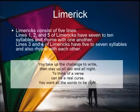And limericks consist of five lines. Lines one, two, and five have seven to ten syllables and rhyme with one another. Lines three and four have five to seven syllables and also rhyme with each other.